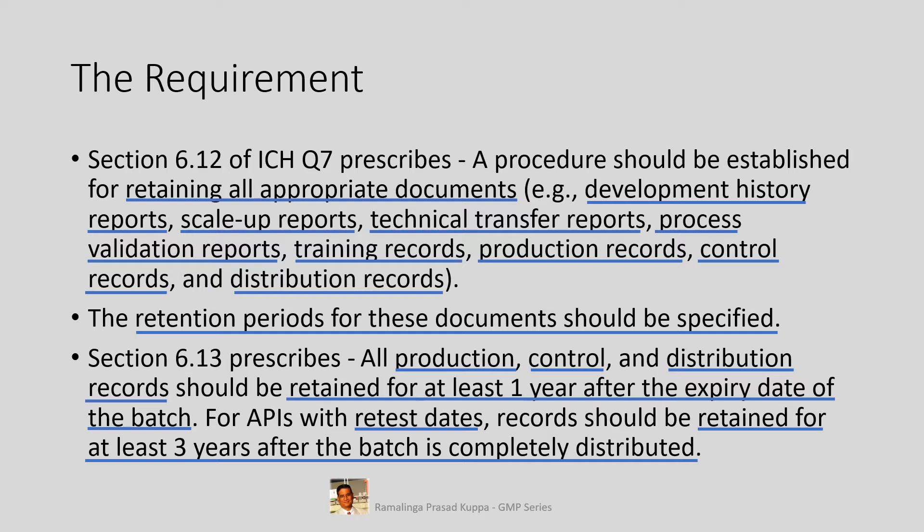There are two conditions. One is at least one year after the expiry date of the batch — calculated on the assumption that all the product would have been consumed by then and there were no adverse impact reports pending. This is valid for products that have an expiry date. For products with a retest date, it is three years after complete distribution of the batch. There should be a monitoring mechanism to link the retention period and the distribution of the batch.